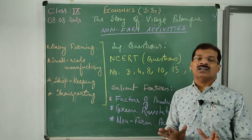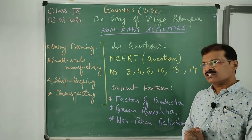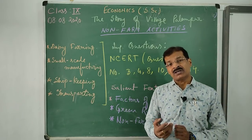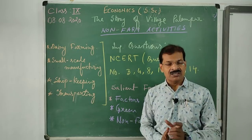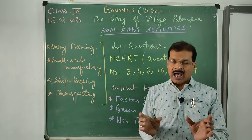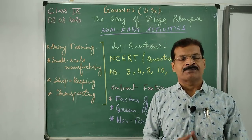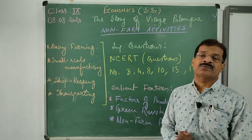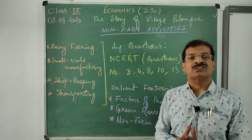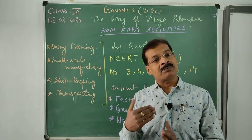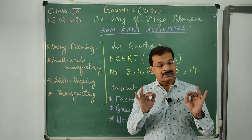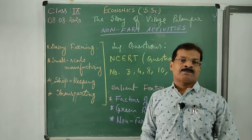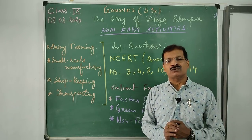Dairy farming involves the rearing of cows or buffaloes for commercial purposes. In dairy farming, we are not only collecting milk but also processing it and preparing different milk products like butter, ghee, curds, chocolates, and many more. This processing in a scientific method, along with milk collection, is called dairy farming. It is a kind of farming where agriculture is not directly being done.